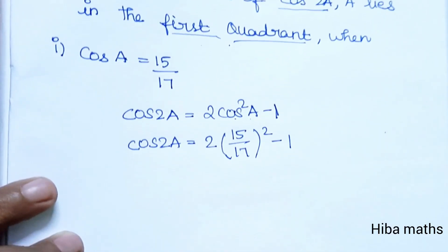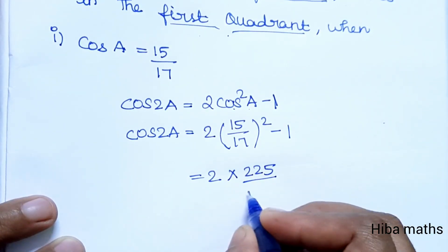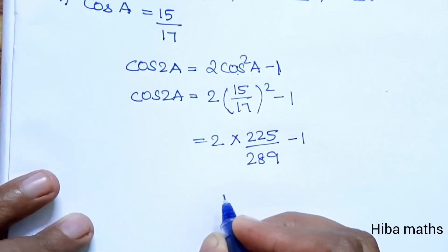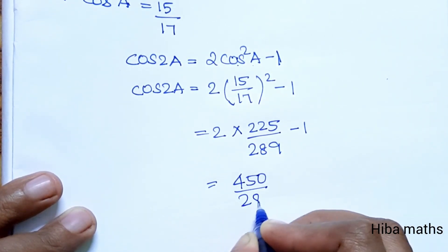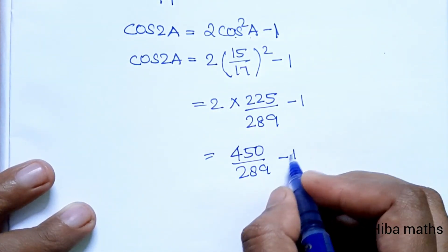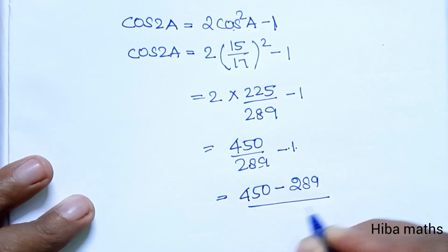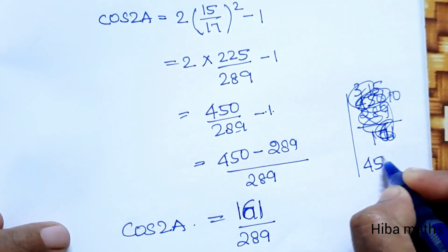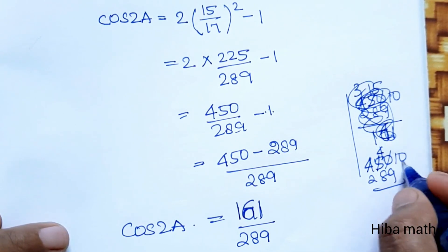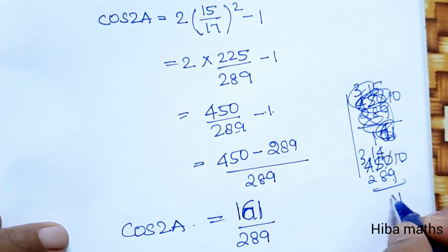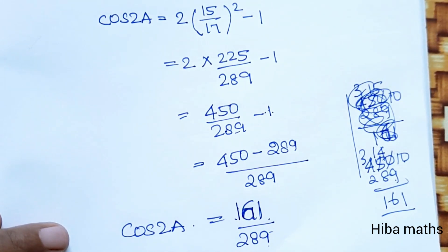cos 2A = 2 × (15/17)² − 1 = 2 × (225/289) − 1 = 450/289 − 1 = (450 − 289)/289 = 161/289. So cos 2A is equal to 161 by 289.